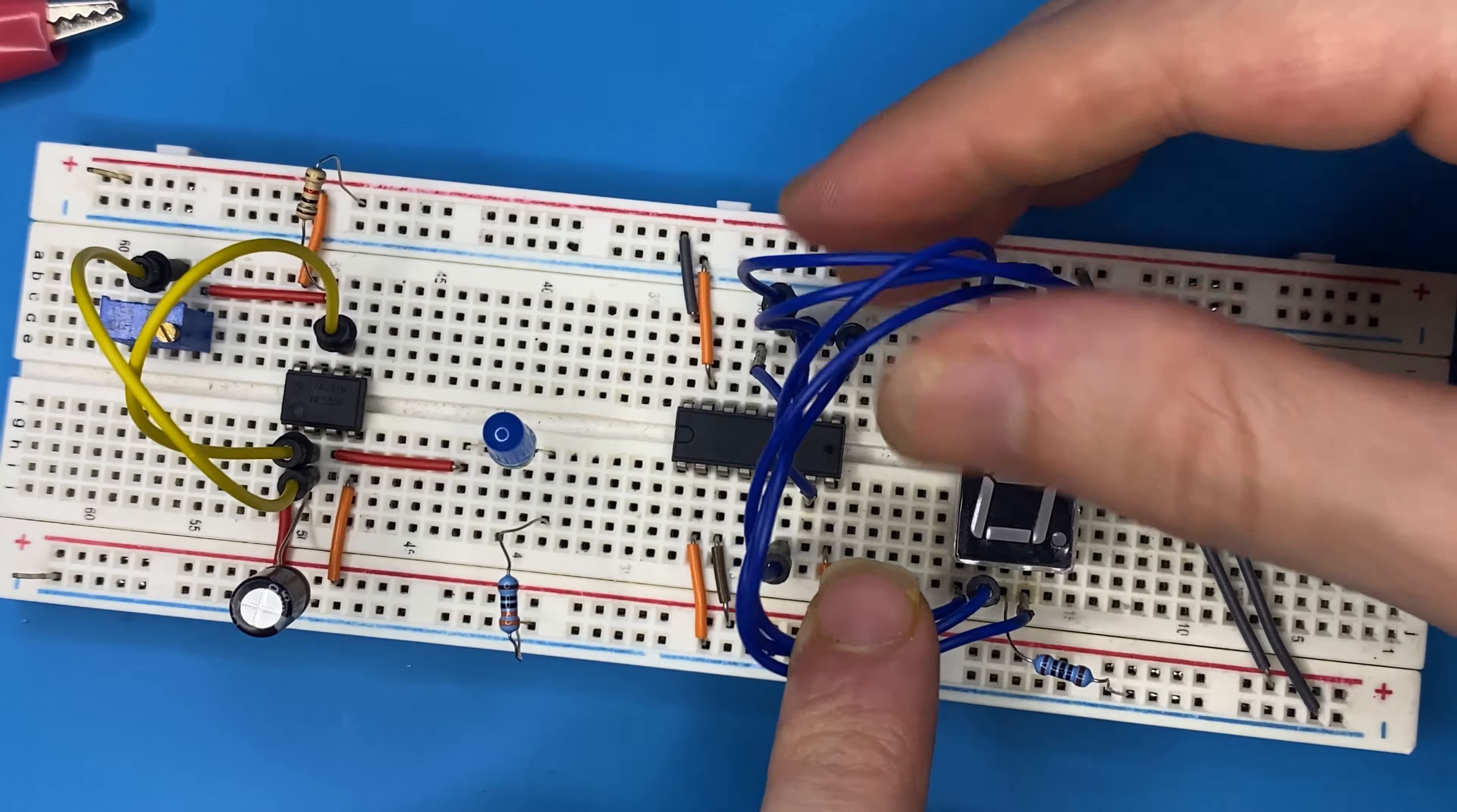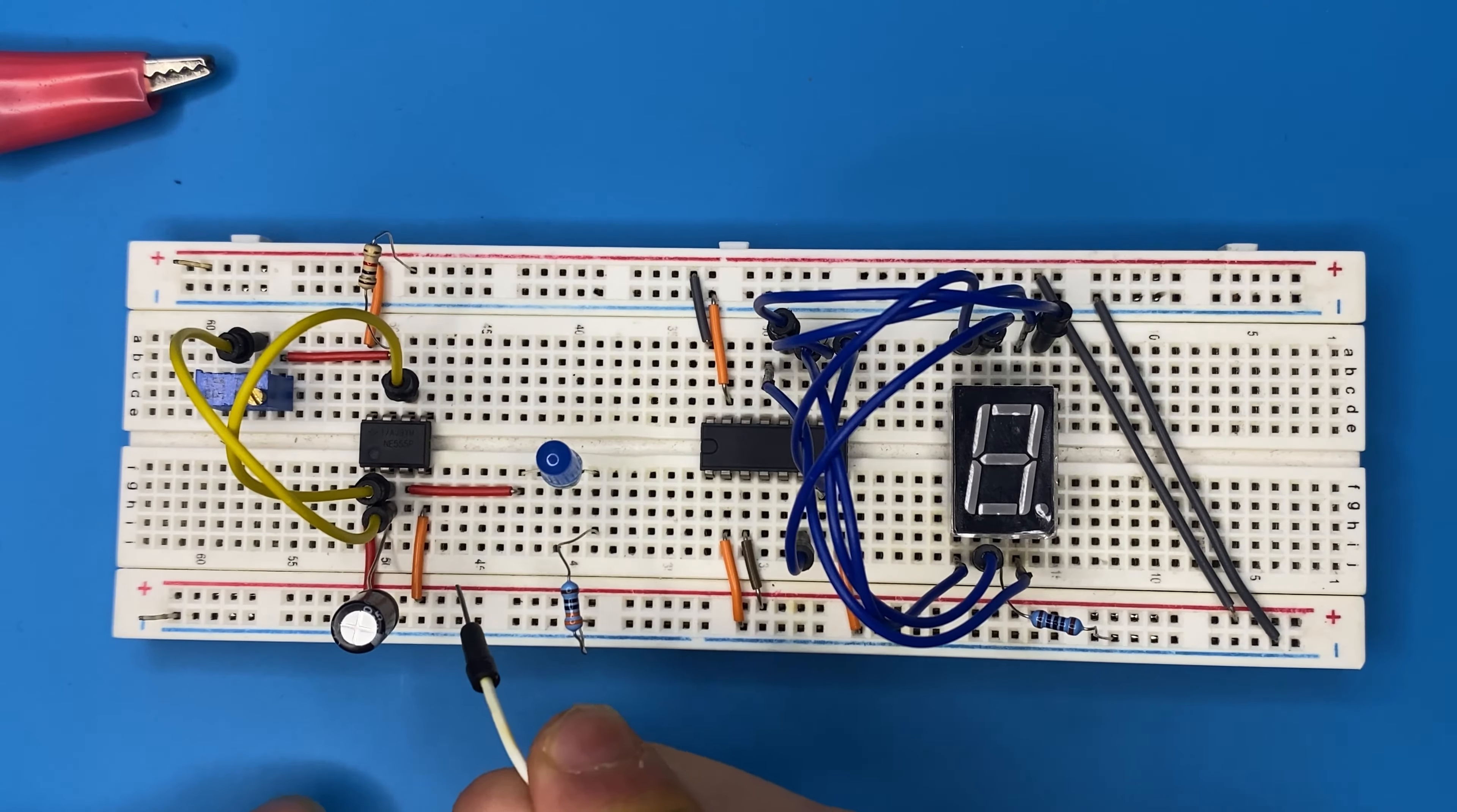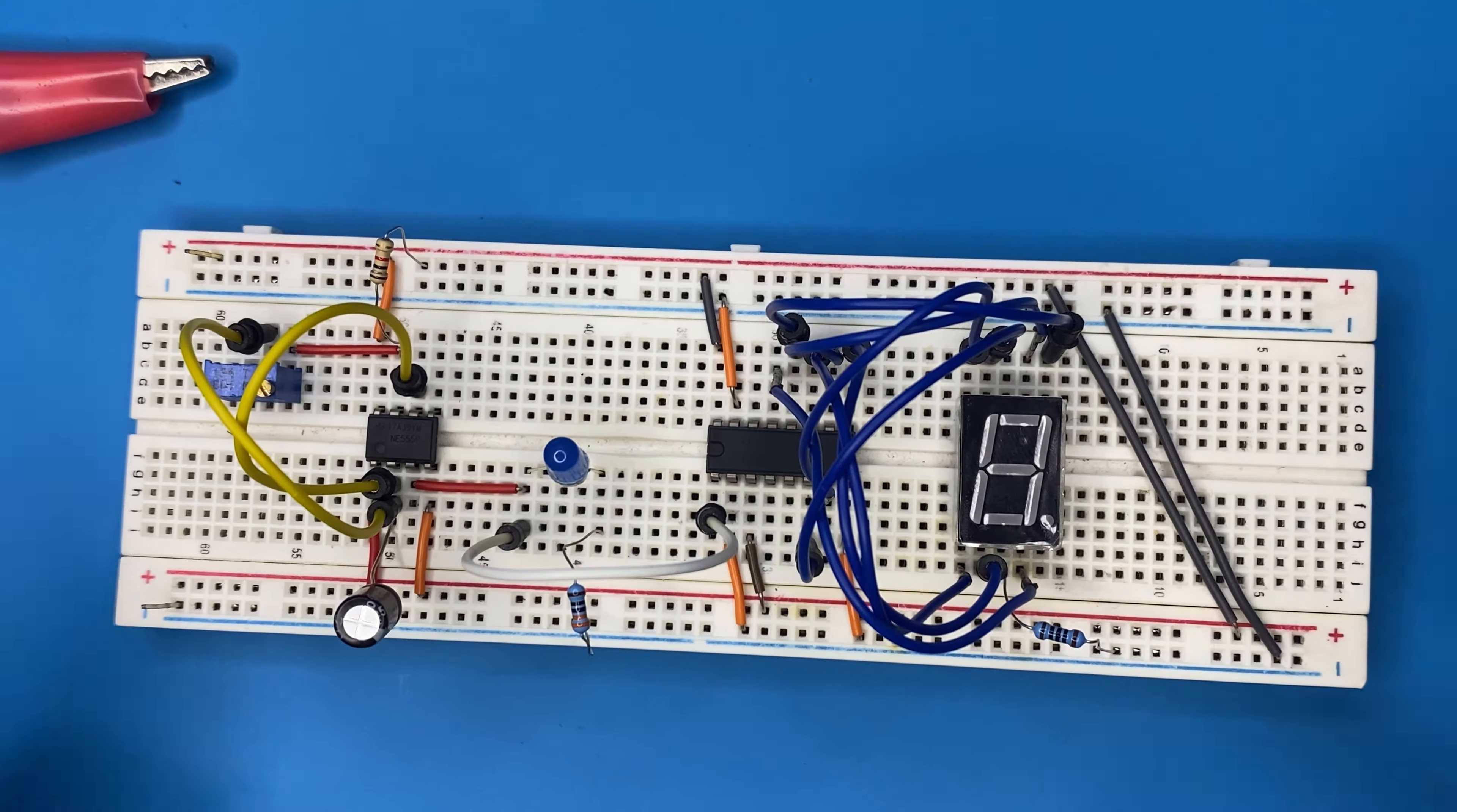So we make some space over here. Now that's good, let's zoom out a little bit. Finally, we are going to connect the output pin of the 555 timer IC, which is over here, to the clock pin of the 4026 IC. We are done with the setup of the project.